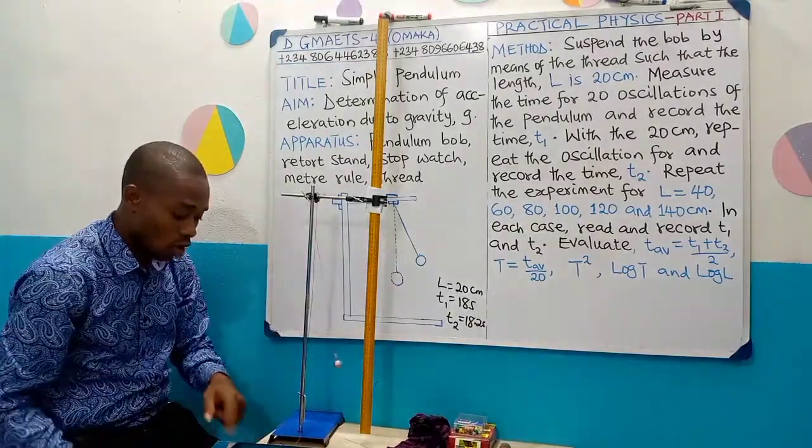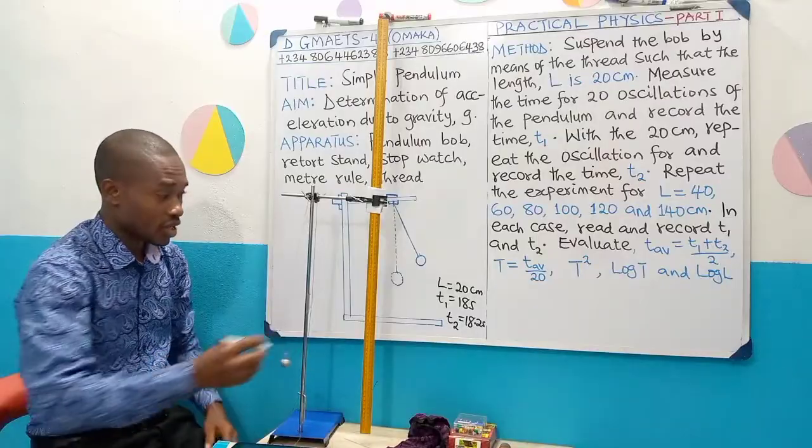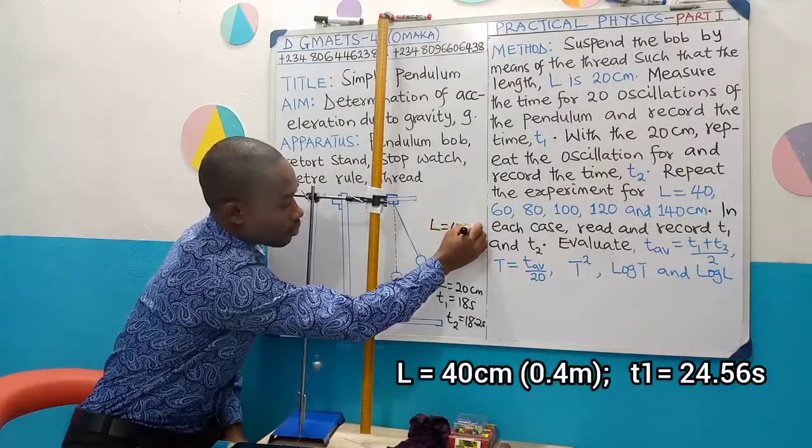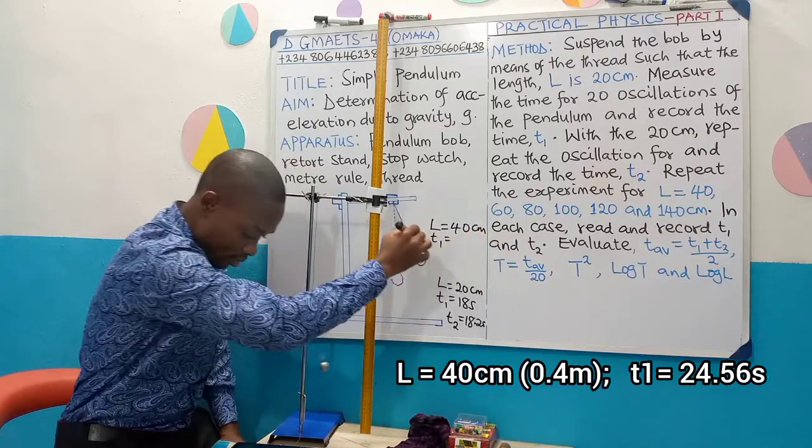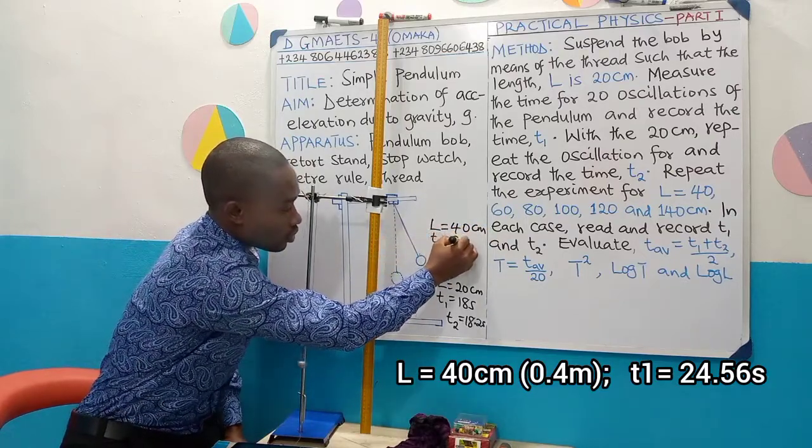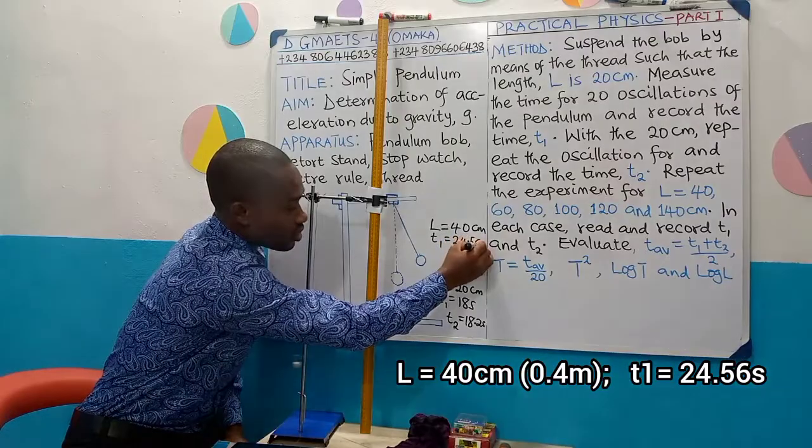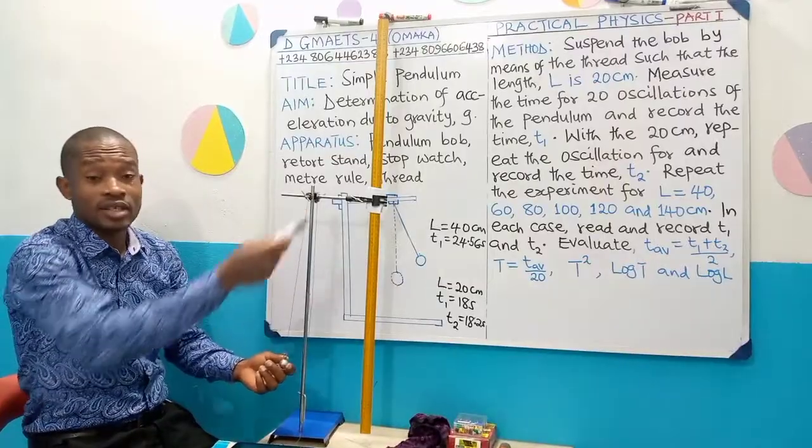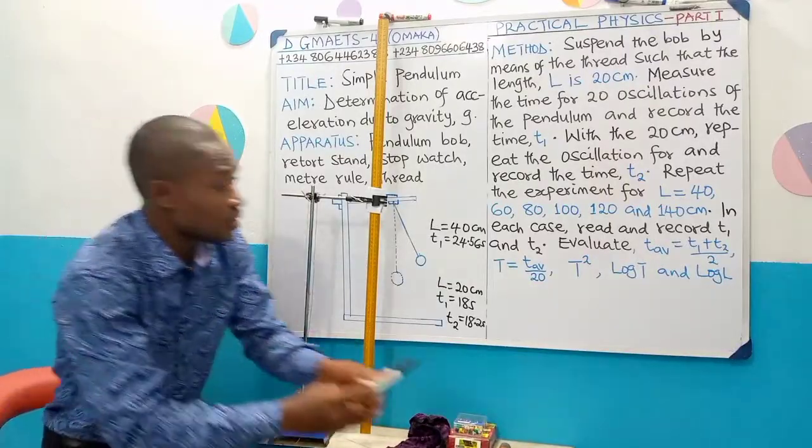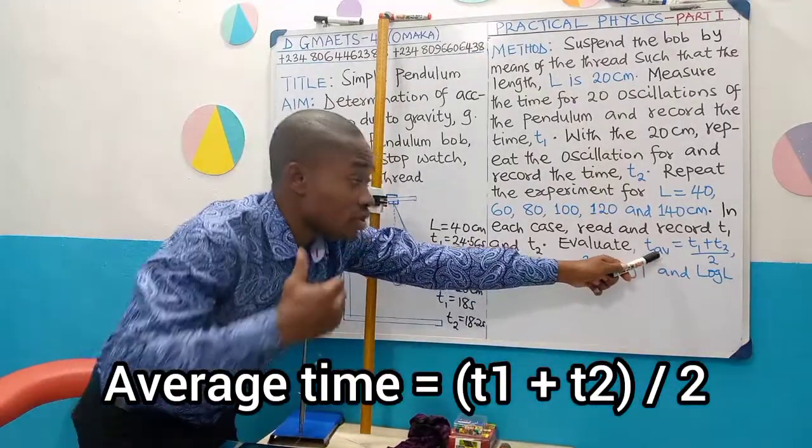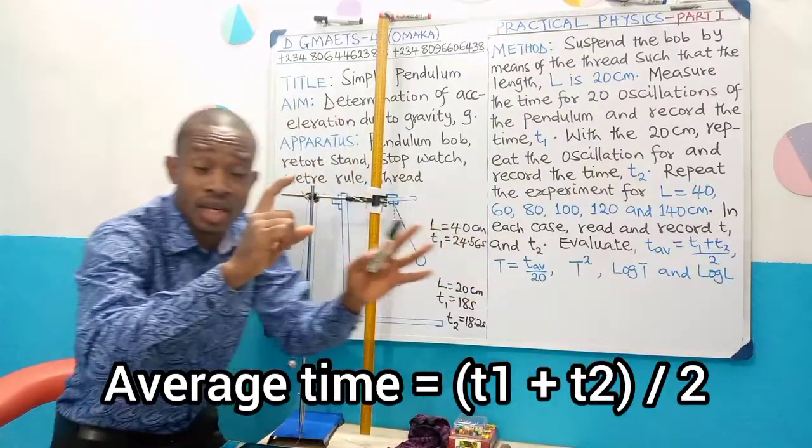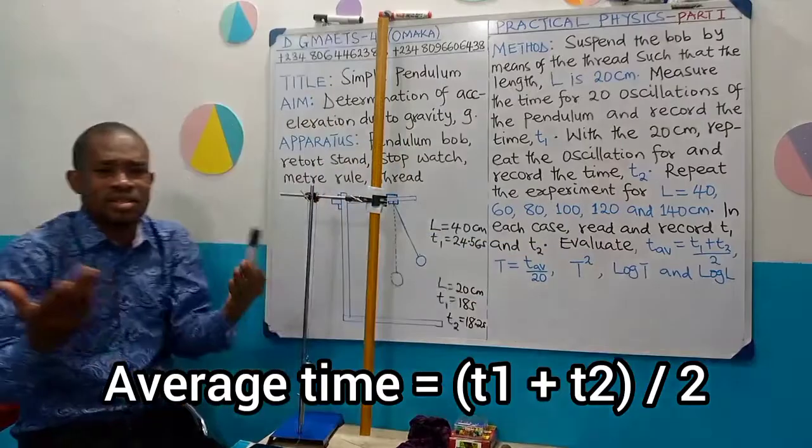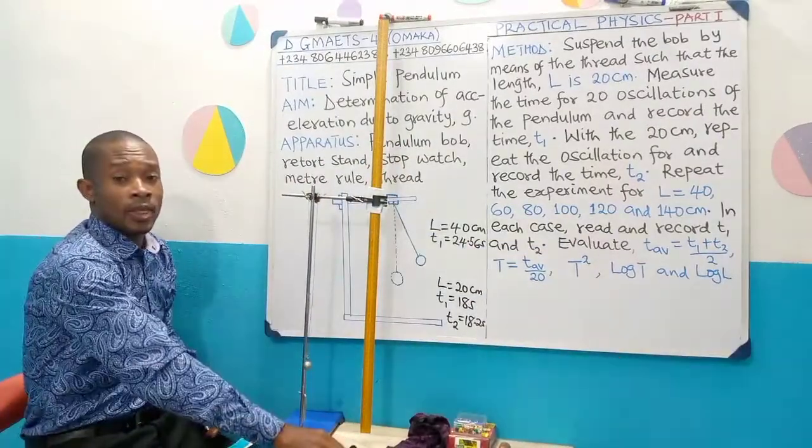So this gave me 24.56 seconds. So when I have a length of 40 cm, my T1 gave 24.56 seconds. So what you need to do is to still repeat the same experiment again to get T2. The reason is this, to obtain T average, which is another thing that we're going to show in our table of value. Average time is T1 plus T2 divided by 2, just as you take average of something.